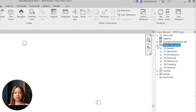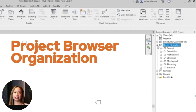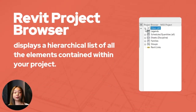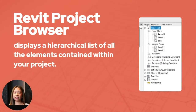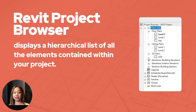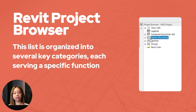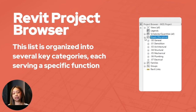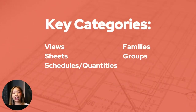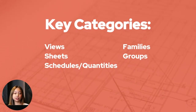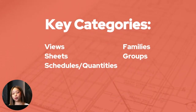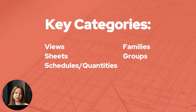Number one: project browser organization. The Revit project browser displays a list of all the elements contained within your project. This list is organized into several key categories, each serving a specific function. So we have views, sheets, schedules or quantities, families, and groups.